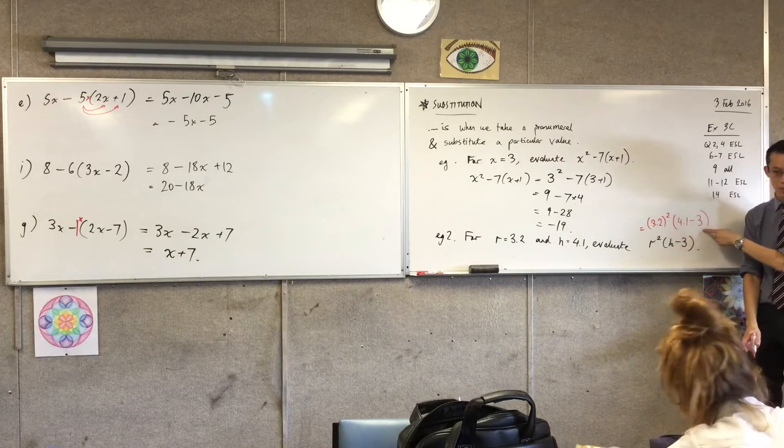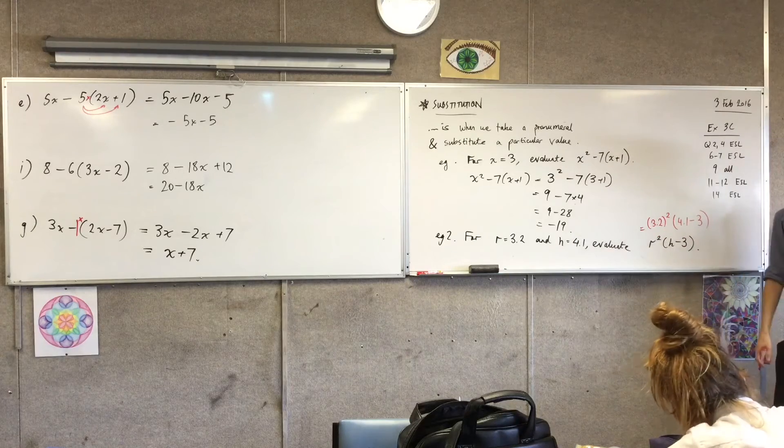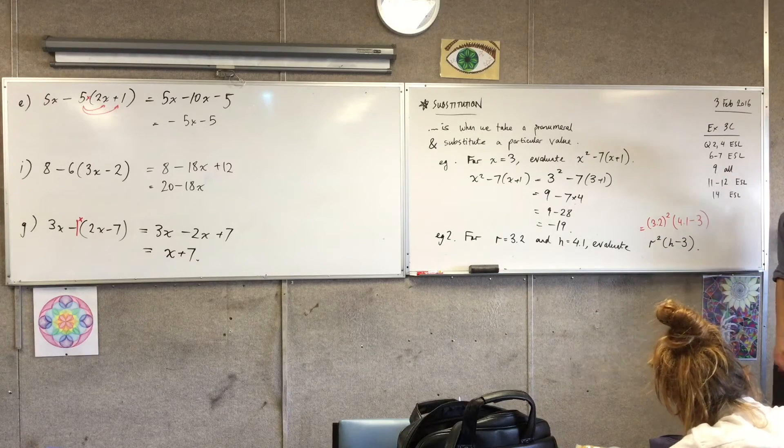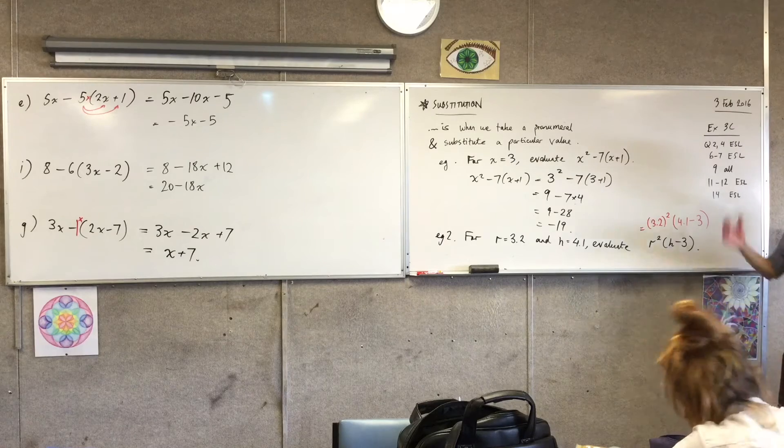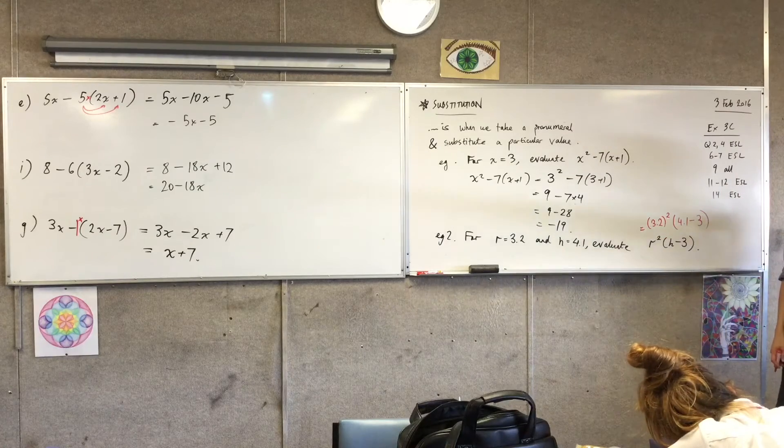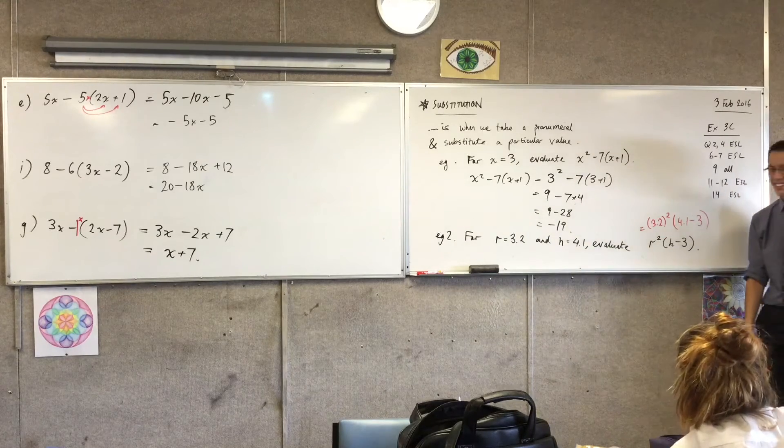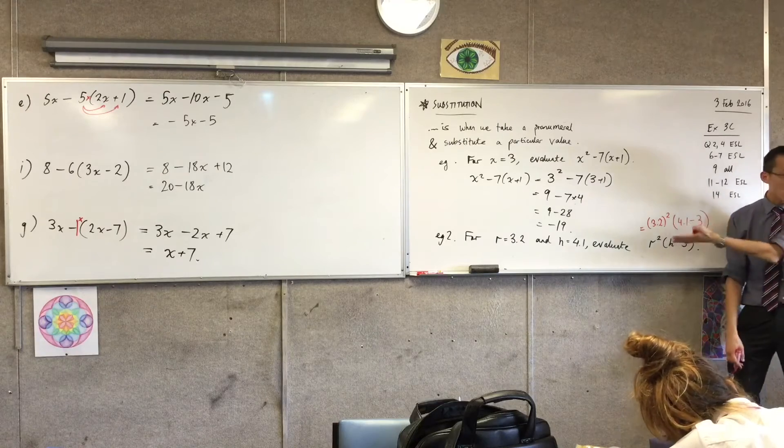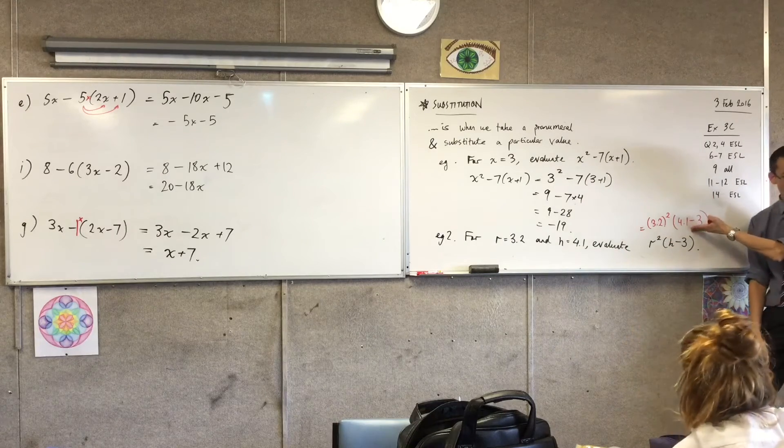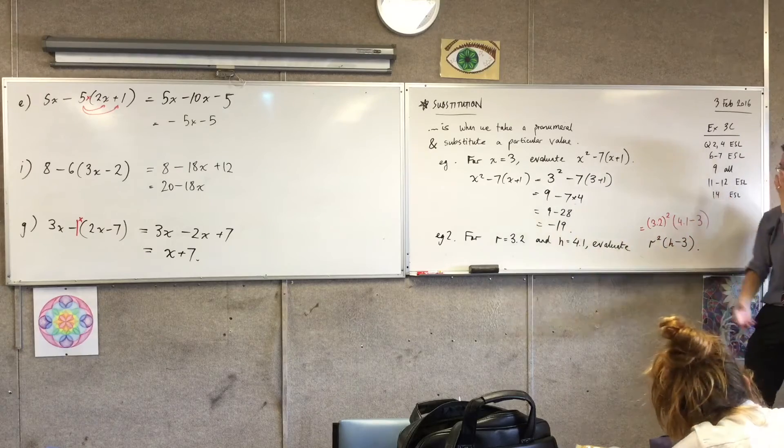So that I wouldn't expect you to have to do in your head, right? Who knows what 3.2 squared is? Ten point something, okay? So you can go ahead and use your calculator for that, multiply it by, this is going to become 1.1. And off you go.